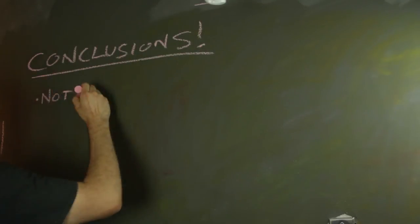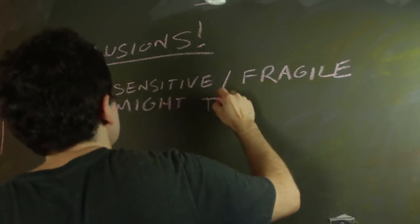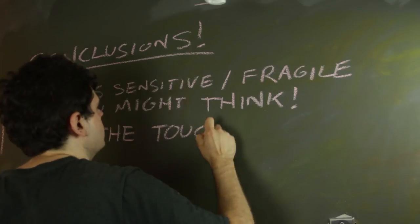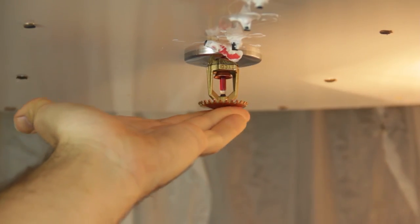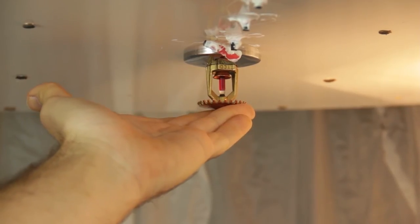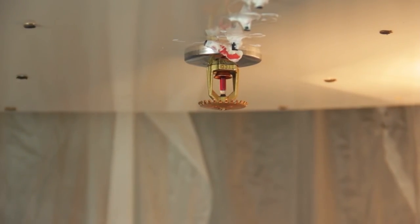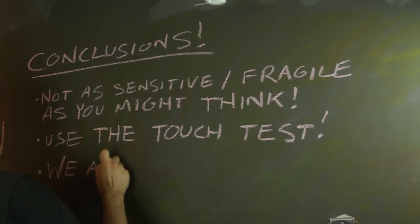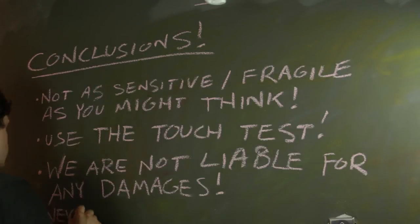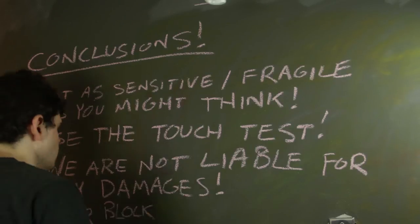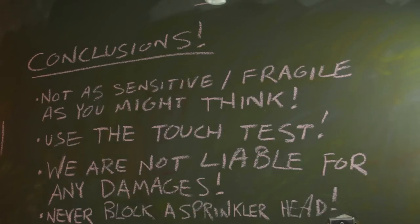In conclusion, it seems like you have to be pretty negligent to set one of these off. But just to be sure, one way to tell if you're getting too hot is to use the touch test. If the metal deflector on the bottom of the sprinkler is hot to the touch, it's a good idea to let things cool down a bit. In any case, we are not liable for any damages, and it's probably a bad idea to try to cover or bypass or block any sort of fire safety mechanism, even if you've promised to put it back the way it was when you're done.